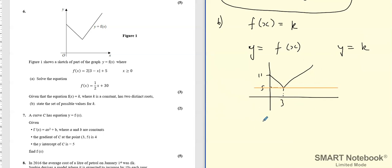So what we can say is that as long as k is less than 11 or equal to 11, there are going to be two solutions, but k must be greater than five for there to be two solutions, two distinct roots.